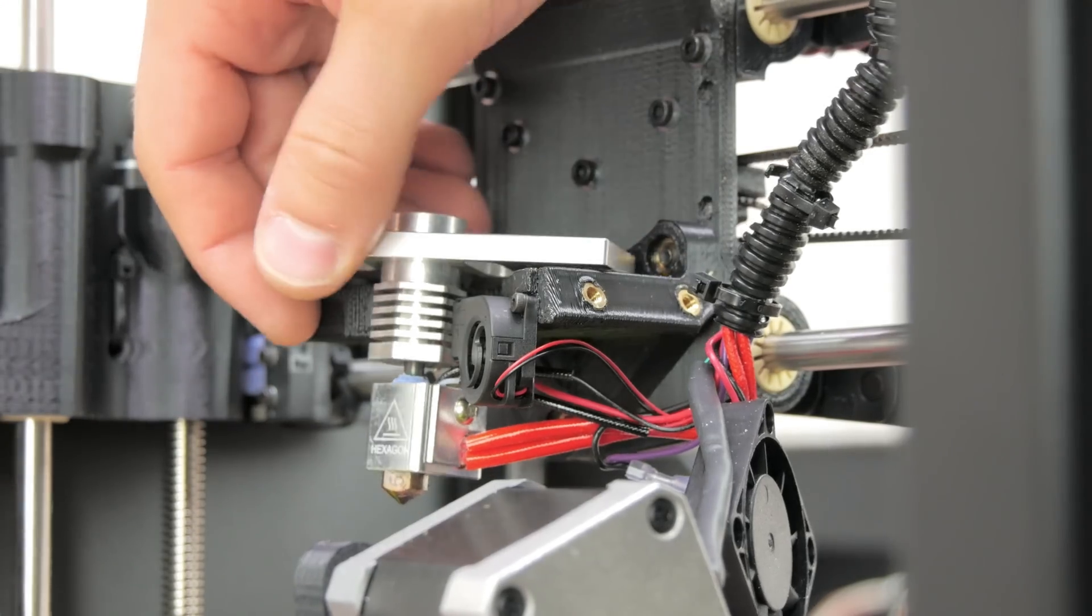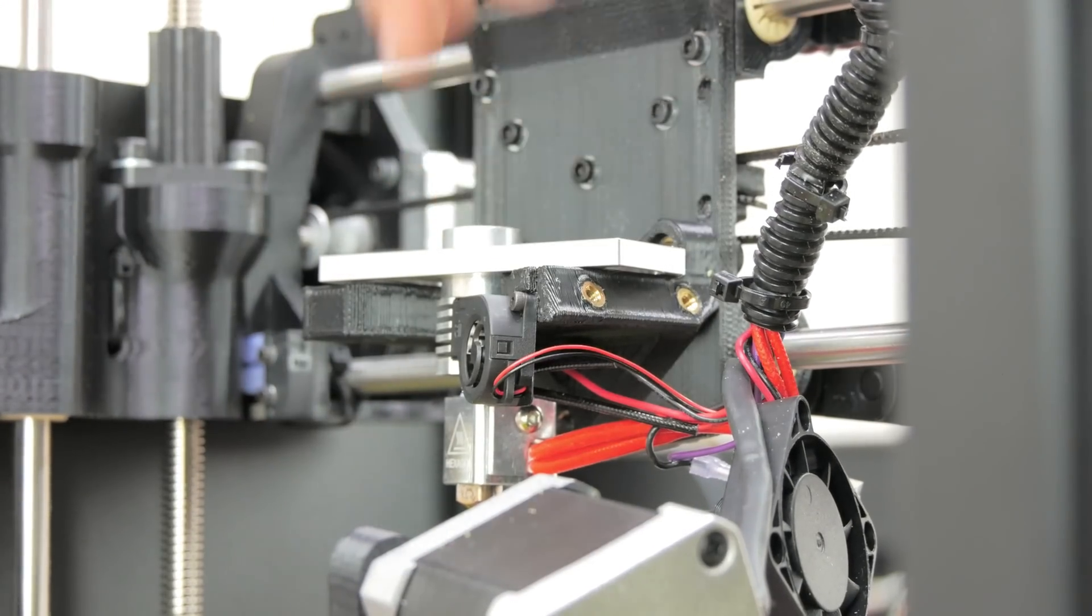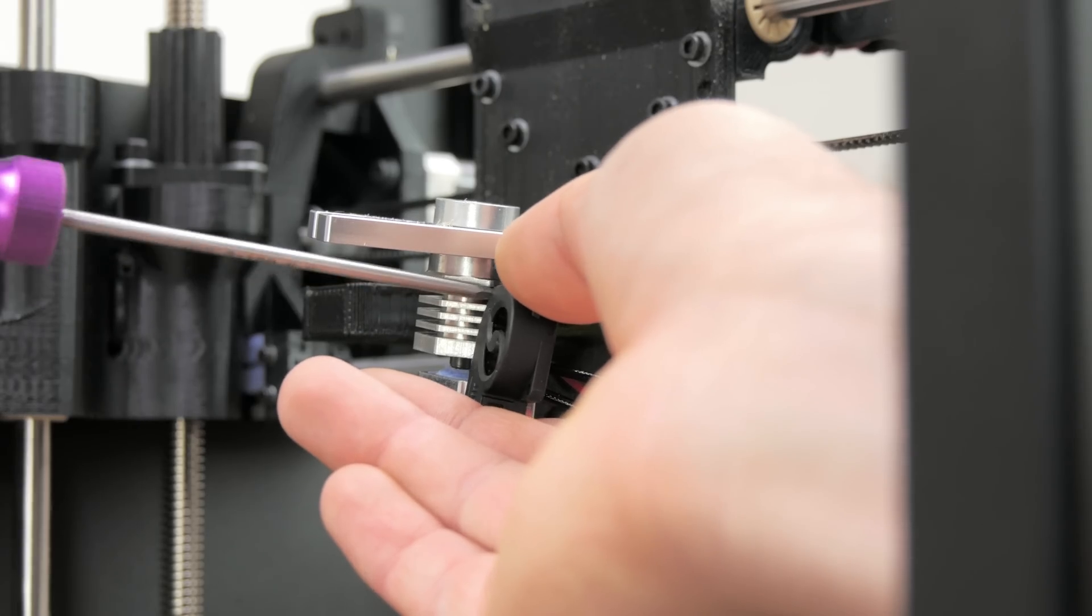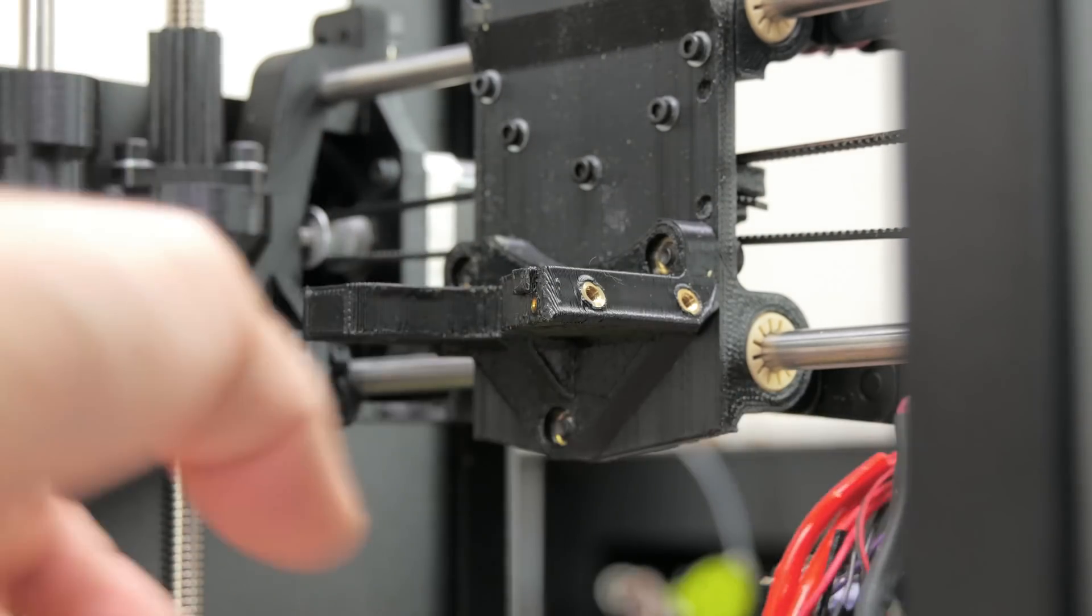Now for your specific printer, this assembly might look a bit different. For example, the hotend might be secured into the extruder block with two screws from the side, so go ahead and remove those if that's the way your printer is assembled.